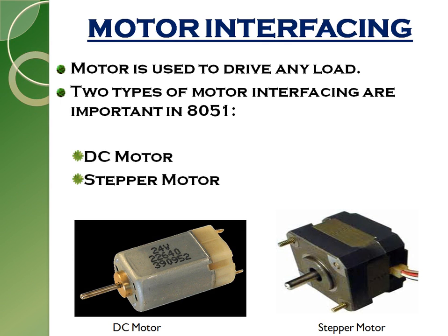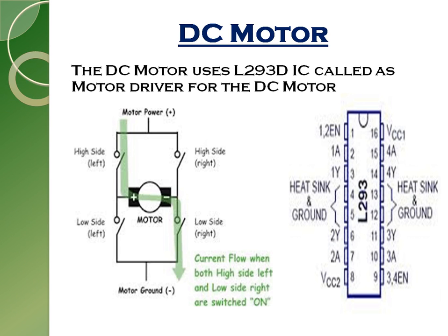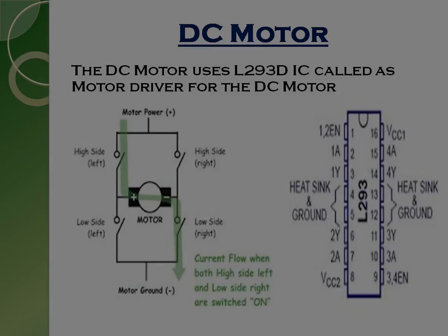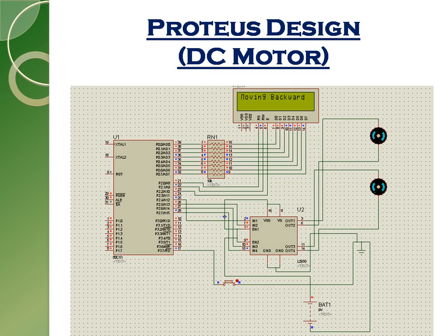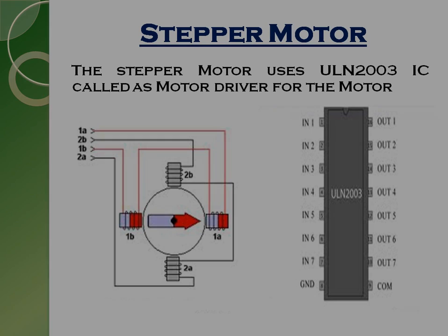Next is motor interfacing. A motor is an output device. Motors consist of either a DC motor or a stepper motor. The DC motor has two poles and does not depend on polarity — connecting one to VCC and another to ground makes it move in one direction, and reversing the polarity reverses the direction. The L293D IC is used as a motor driver to increase the current and voltage for the DC motor. This is the Proteus design of the DC motor interface, which also displays on the LCD whether the motor is moving forward or backward.